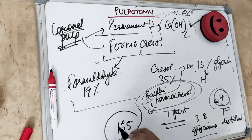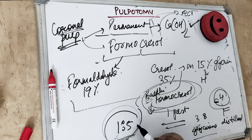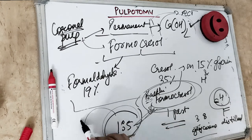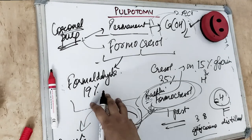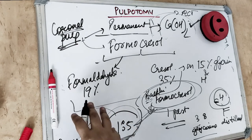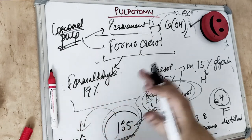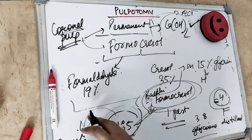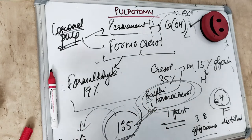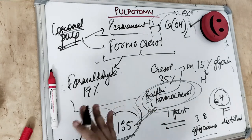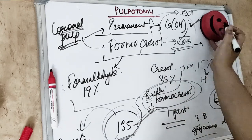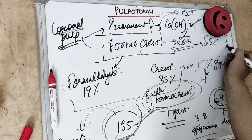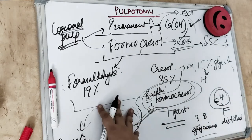The cotton pellet, moistened with the 1:5 concentration of Buckley's formocresol, is kept on the pulp chamber for 1 minute. The pellets are then removed, the pulp chamber is dried, and a new cotton pellet is placed. A thick paste of hard-setting ZOE is placed over it, followed by a stainless steel crown. This completes the pulpotomy procedure.